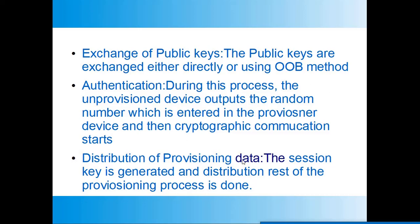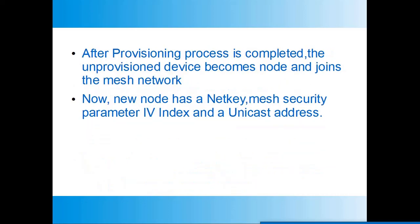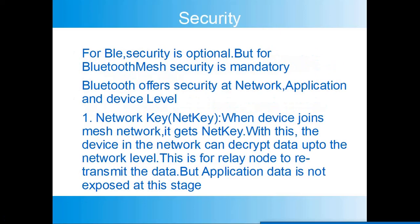Once the keys are exchanged, the authentication process begins. The unprovisioned device outputs a random number which is entered into the provisioner, and then cryptographic communication starts. Once authentication is done, a session key is generated and the remaining provisioning data is distributed. When provisioning is complete, the unprovisioned device becomes a node and joins the mesh network. The new node has a network key, a mesh security parameter index, and a unicast address. Unlike BLE where security is optional, in Bluetooth mesh security is mandatory.